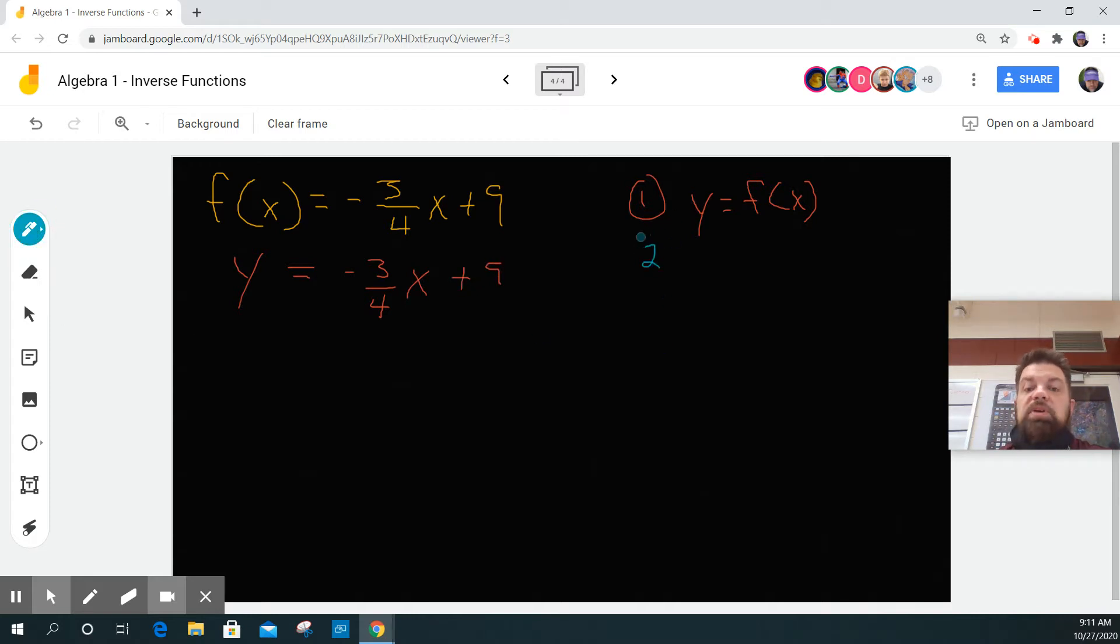The next step is we're going to swap x and y. Wherever there's an x, I put a y. Wherever there's a y, I put an x. So this becomes x equals negative three-fourths times y plus 9.